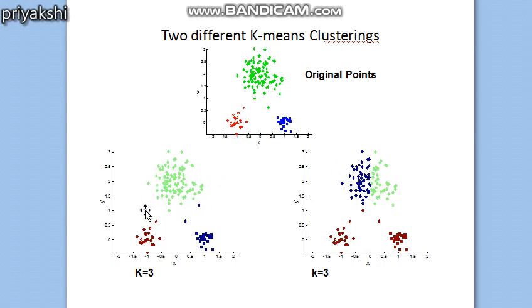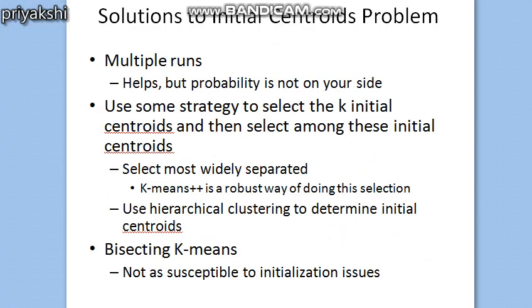If you compute the SSE, the partition with the minimum SSE will be considered as the optimal clustering. One problem that always exists with K-means clustering is choosing the initial centroid. This is a very important stage because choosing the proper initial centroid is the key step of the basic K-means procedure.